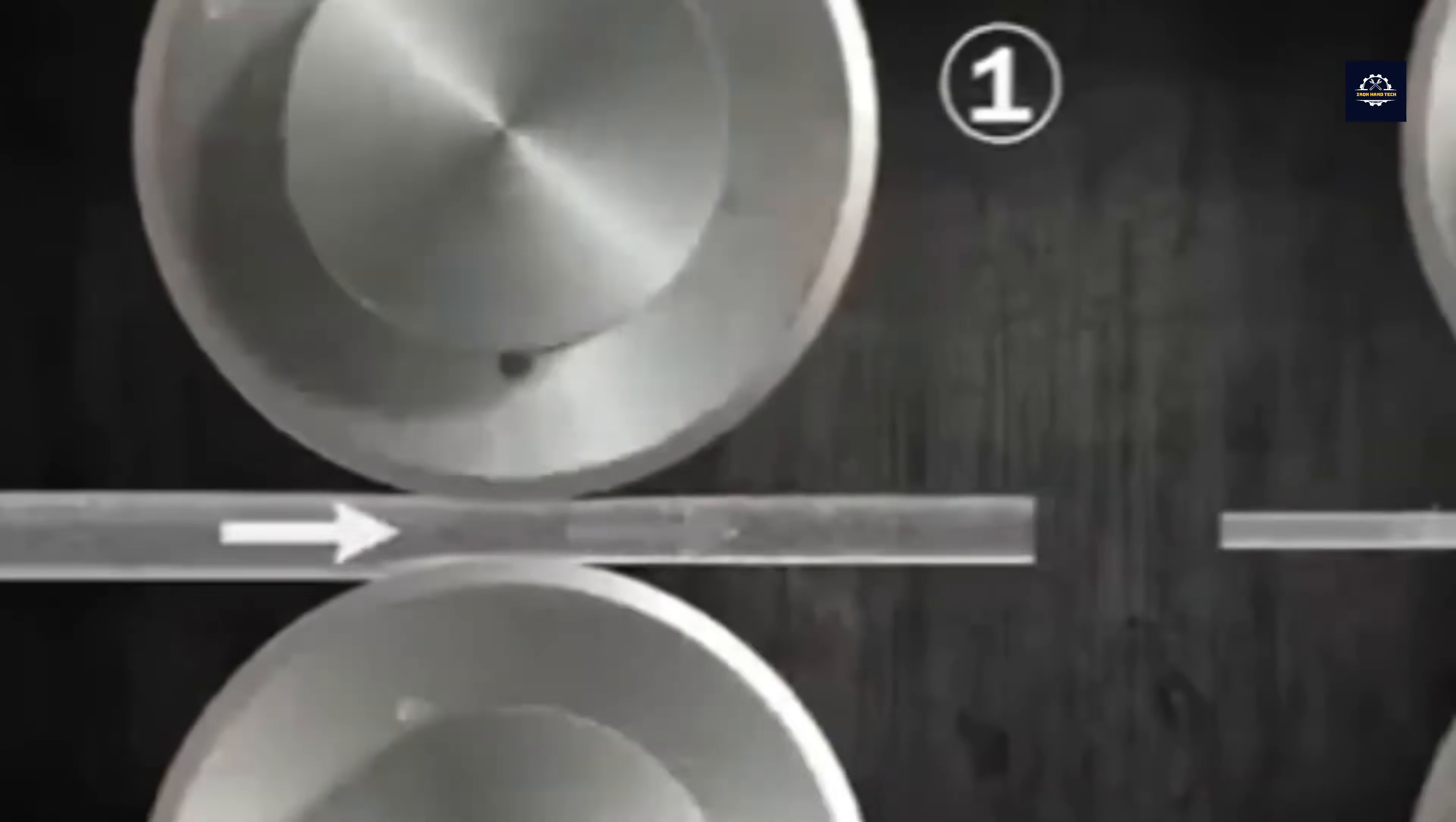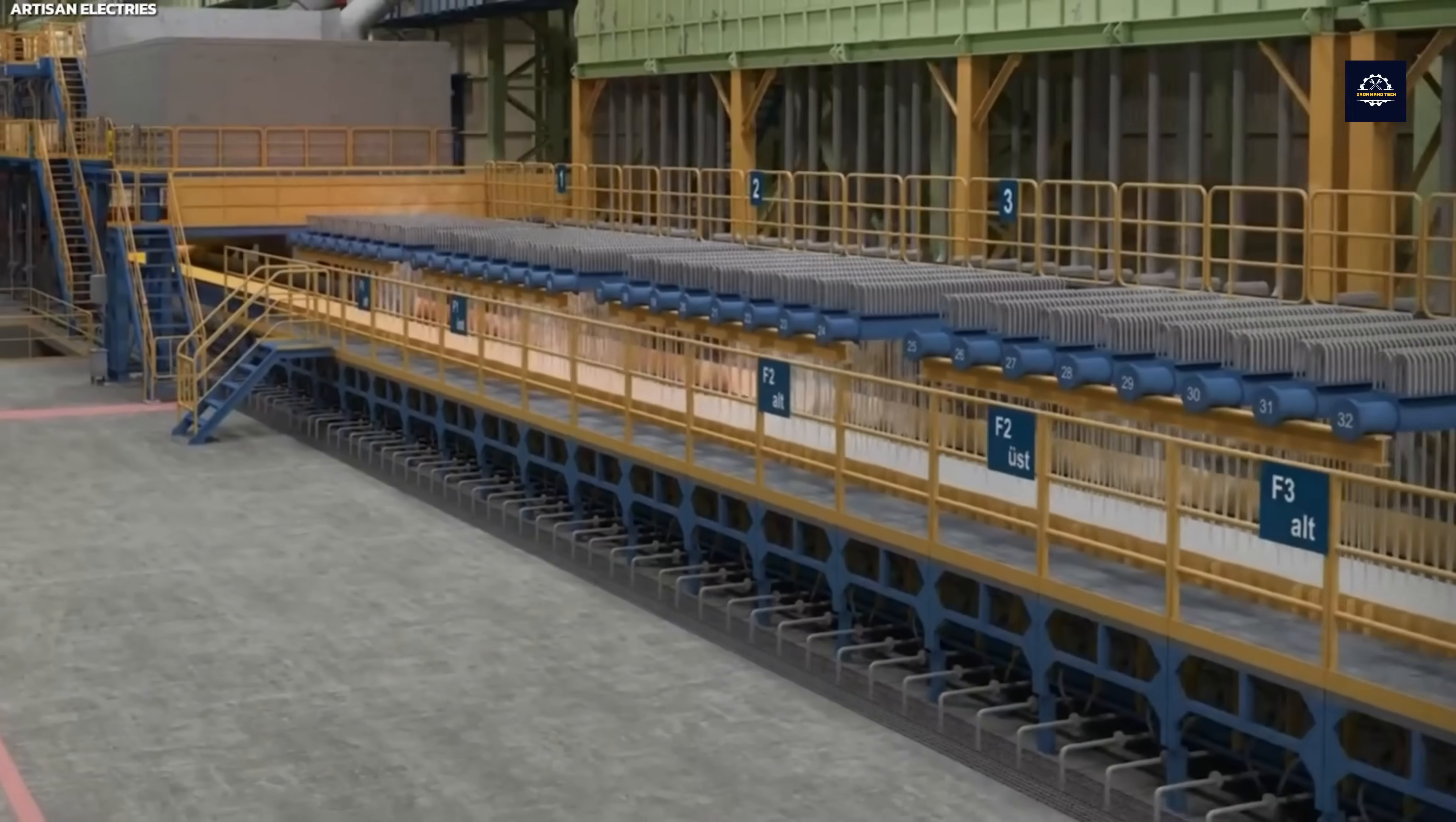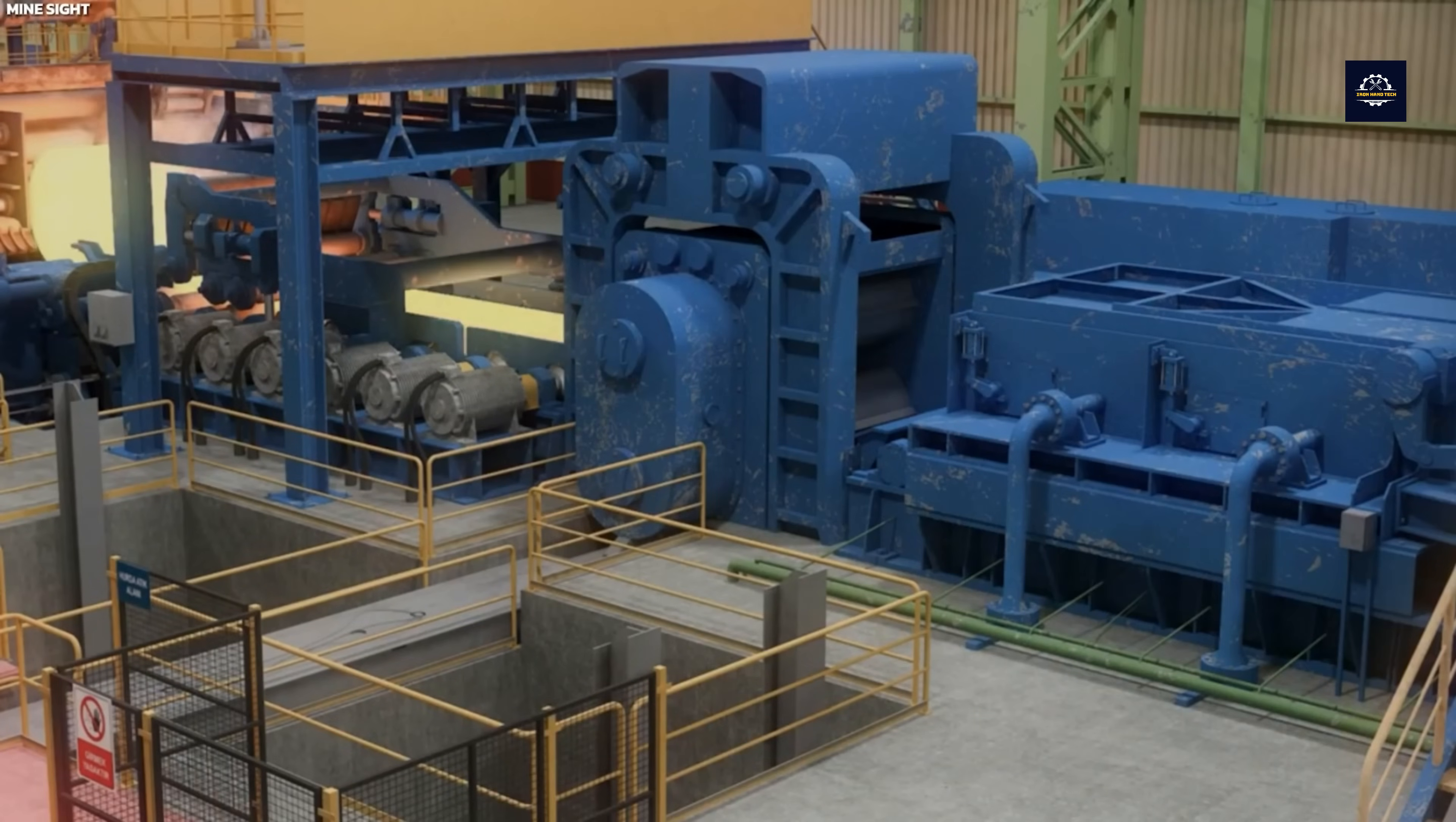The rolling mill consists of two large steel rollers rotating in opposite directions. As the copper ingot is fed between these rollers under extreme pressure, it gradually thins out, much like flattening dough with a rolling pin. This process is called hot rolling because the copper is heated red hot during the process.